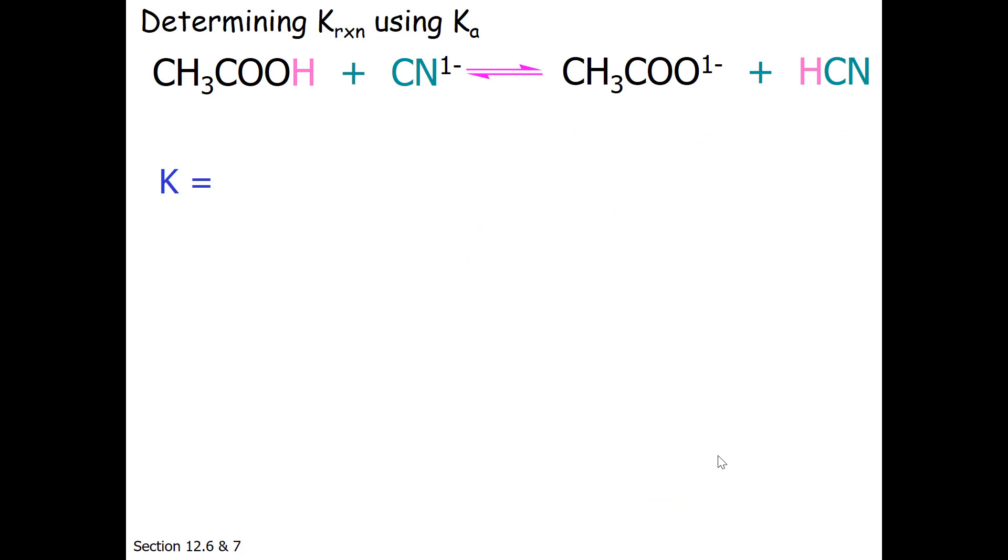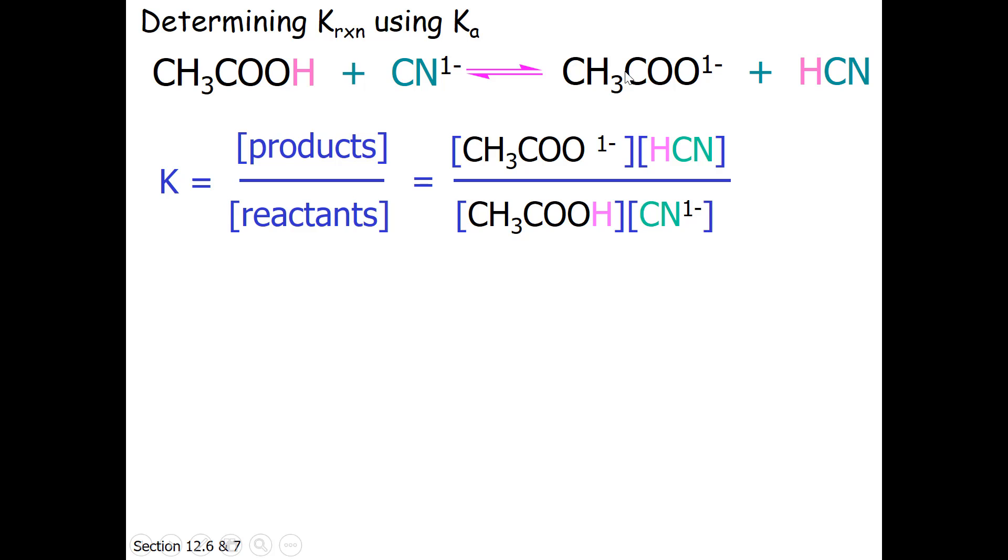Let's look at the equilibrium expression for this reaction. It is products divided by reactants, or the acetate times the hydrocyanic acid over acetic acid and the cyanide ion.